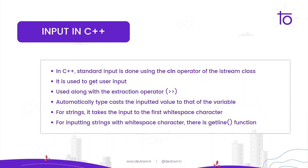In C++, standard input is done using the cin operator of the istream class. It is used to get user input, and is used along with the extraction operator. One thing cin does is it automatically typecasts the inputted value to that of the variable. For strings, it takes the input till the first whitespace character. But if we want to input strings which contain whitespace characters, we use the function called getline.